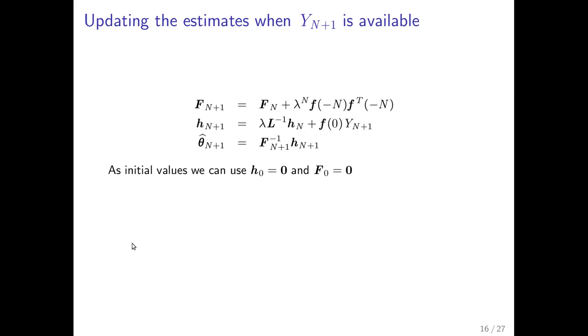Now as for the global model we can also here make an iterative update. And you see the equation for F_n+1 is quite similar to before for the global model the only difference is that we add lambda to the n power when you add the last term in the outer products that are summed. For h it's also just one place where lambda comes in. So we forget the old estimate shifted backwards in time with the L inverse operator. And then we forget it by multiplying by lambda.